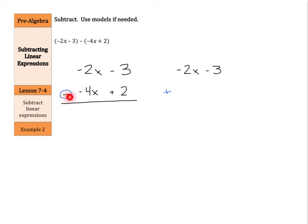And now, since I took the opposite of subtraction as addition, the opposite of -4x is a positive 4x, so just 4x. And the opposite of a +2 is -2. So now I have a -3 plus -2, and that is a -5. And I have a -2x plus a positive 4x, and that is a positive 2x. So my final answer here is 2x - 5.